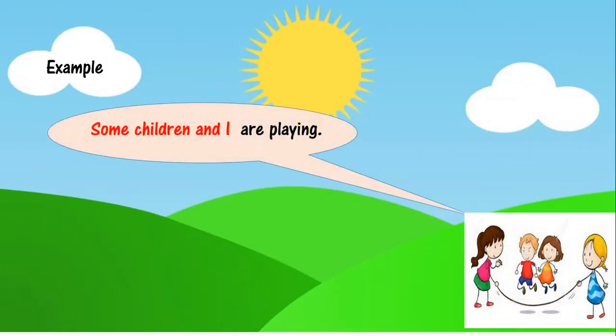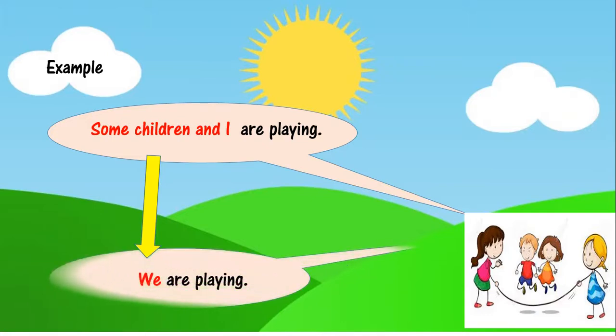Now in this picture, some children and I are playing. Is picture me main aur kuch bachye khail rahe hai. Some children and I, ye aisa group hai jis ka hissa main bhi hoon. Toh jab main bhi is group ka hissa hoon, toh main konsa pronoun use kar sakti hoon? We. I can say we are playing. Instead of saying some children and I are playing, I can say we are playing.